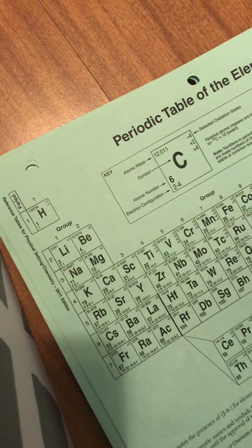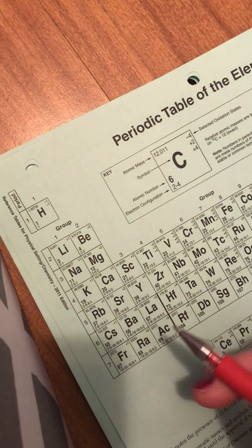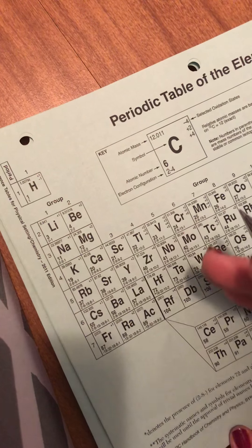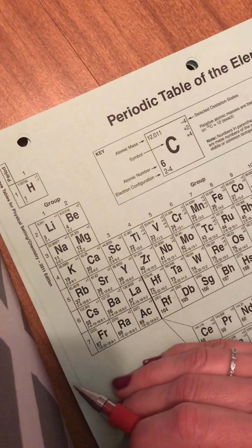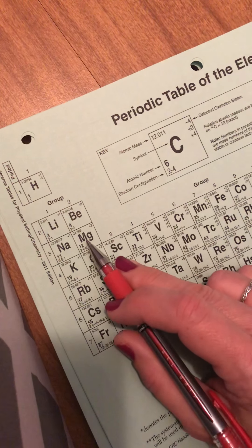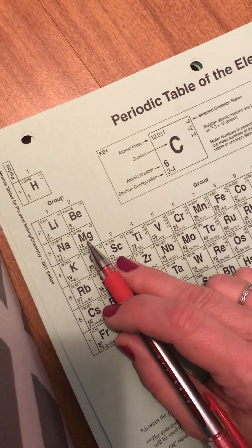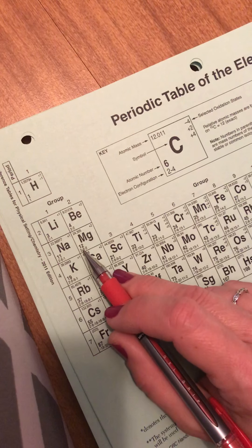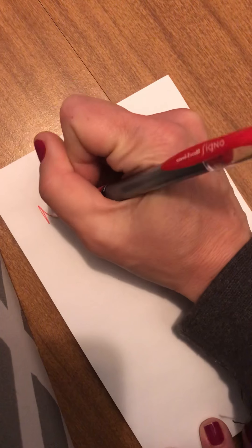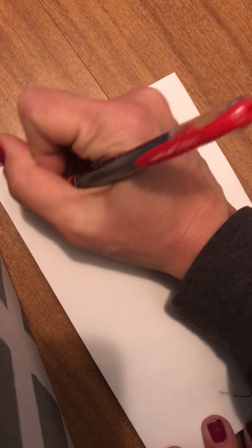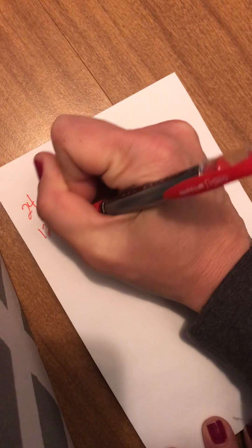So if we pick an element from the periodic table here, we can look at how it behaves as an atom and how it behaves as an ion. So let's say I pick magnesium here. Magnesium has a mass of 24 and atomic number of 12. So I have an atom of Mg, has a mass of 24, an atomic number of 12.